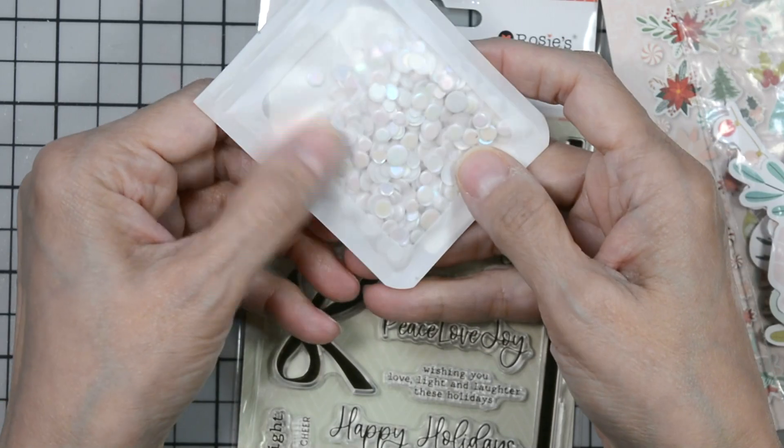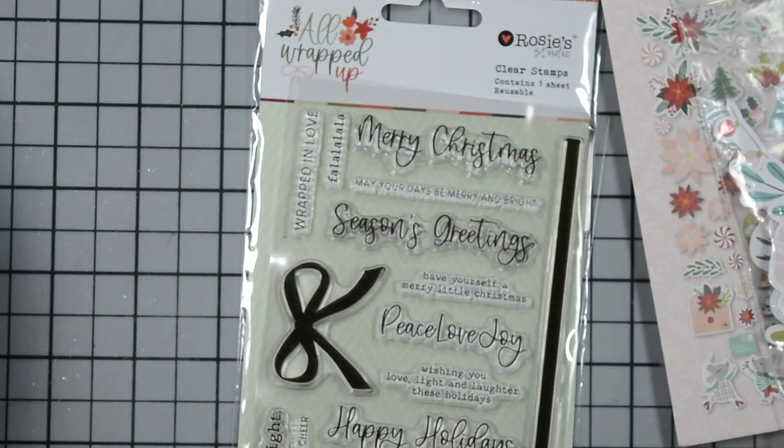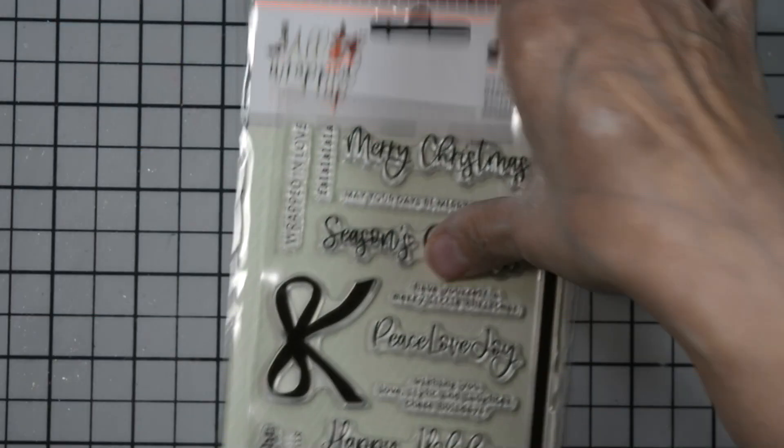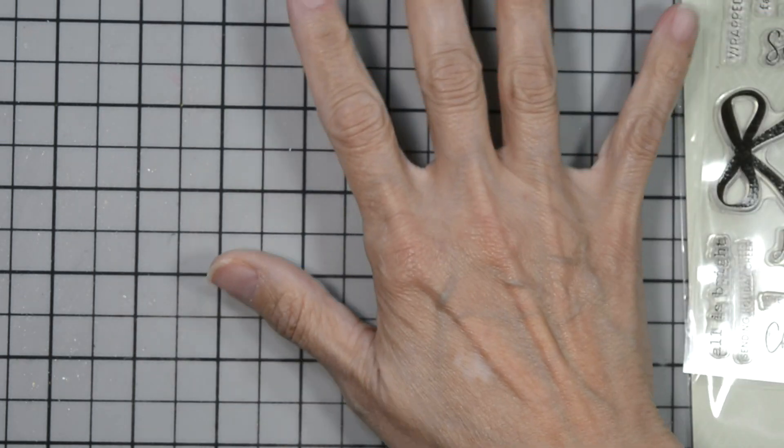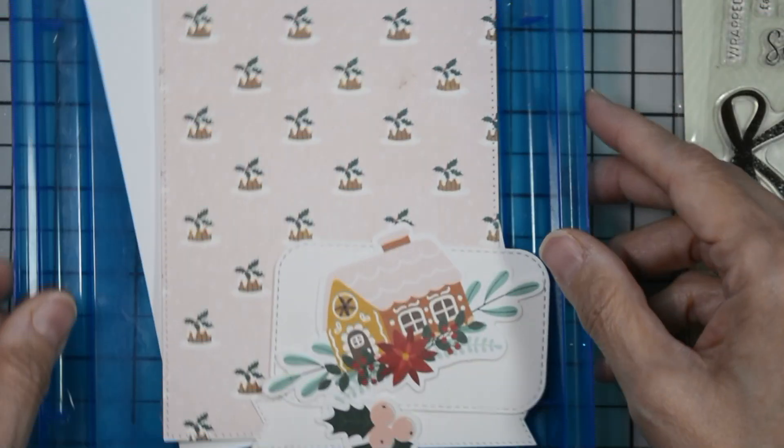From my stash this calls for confetti. I'm going to be using the pearlescent confetti. I'm going to set everything to the side so I'm going to show you the components that we have for our card.